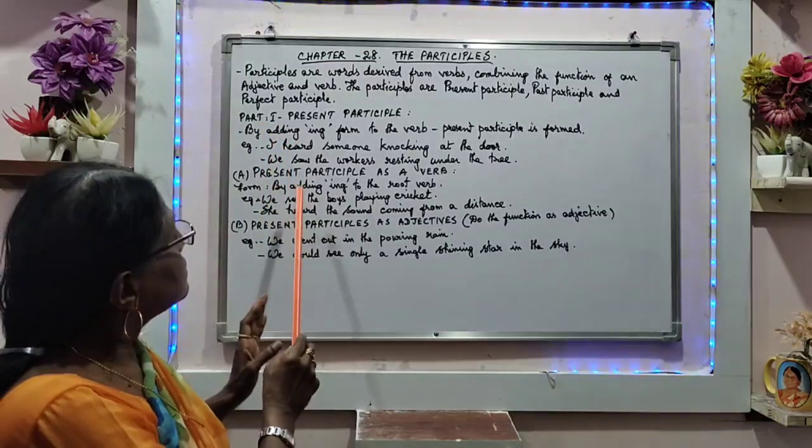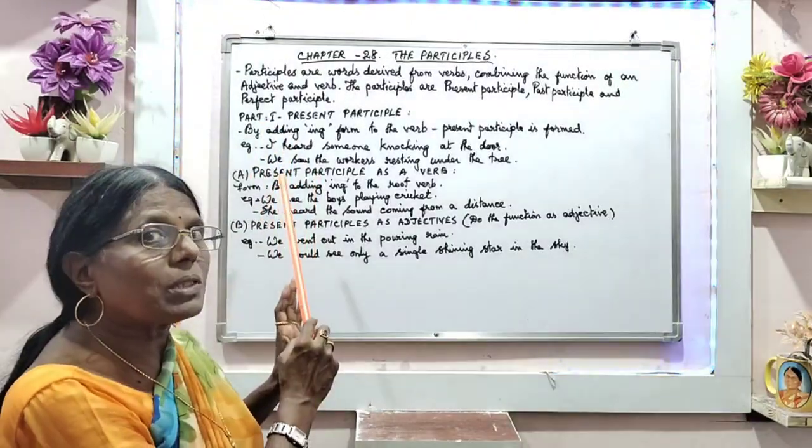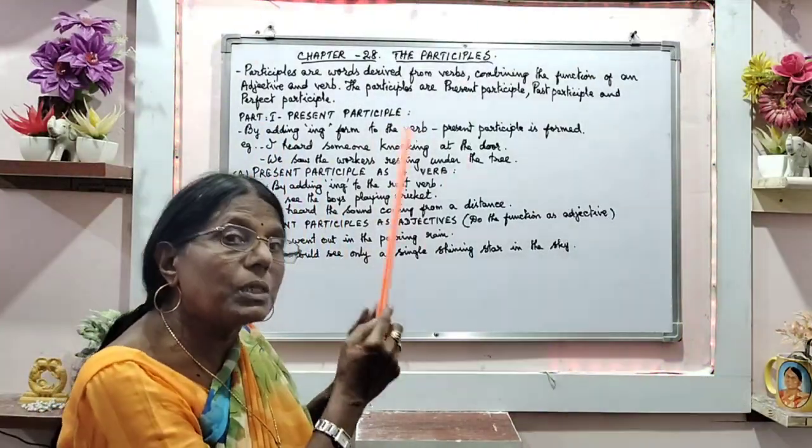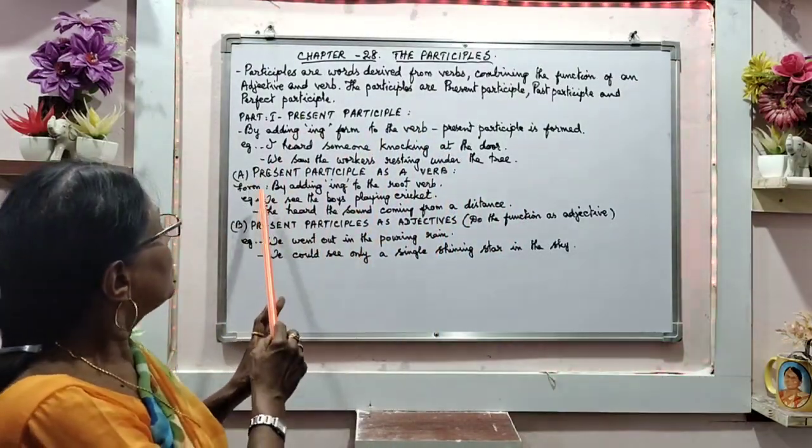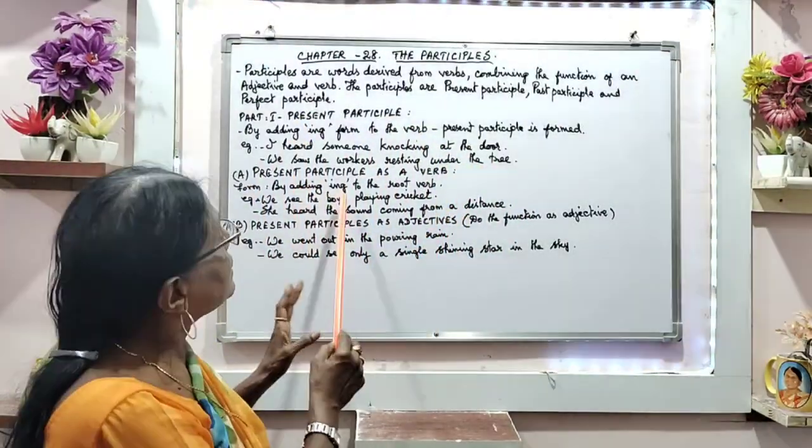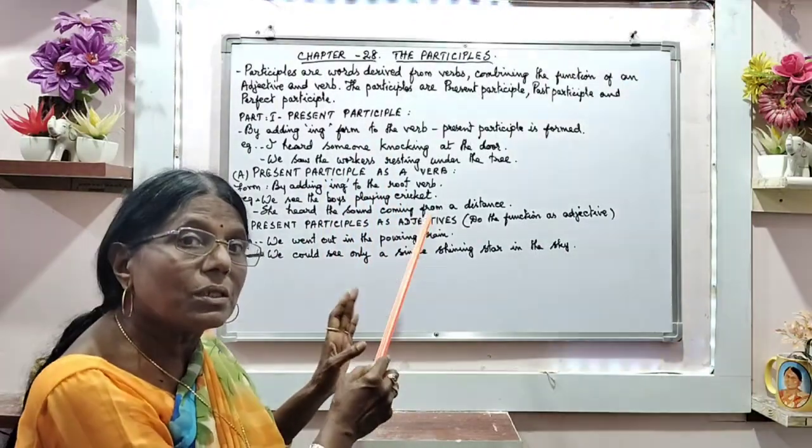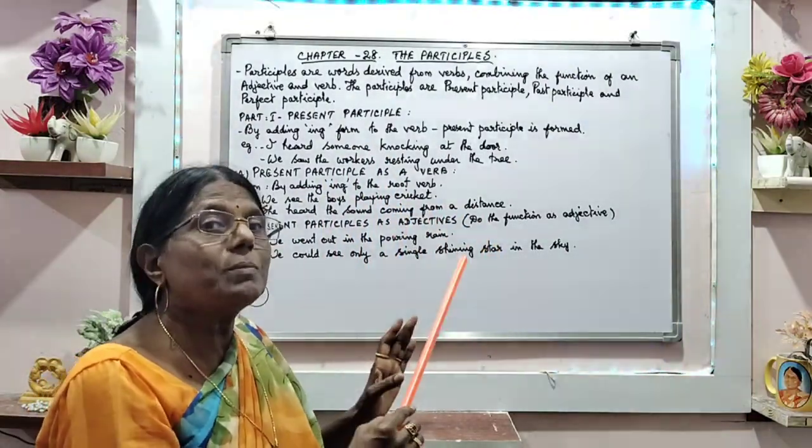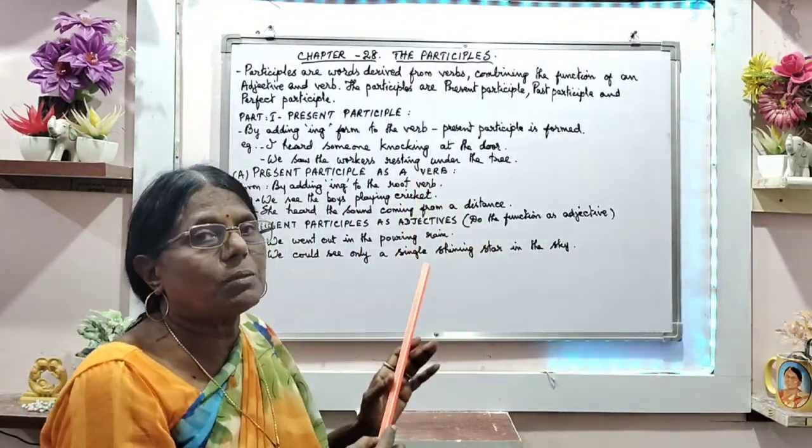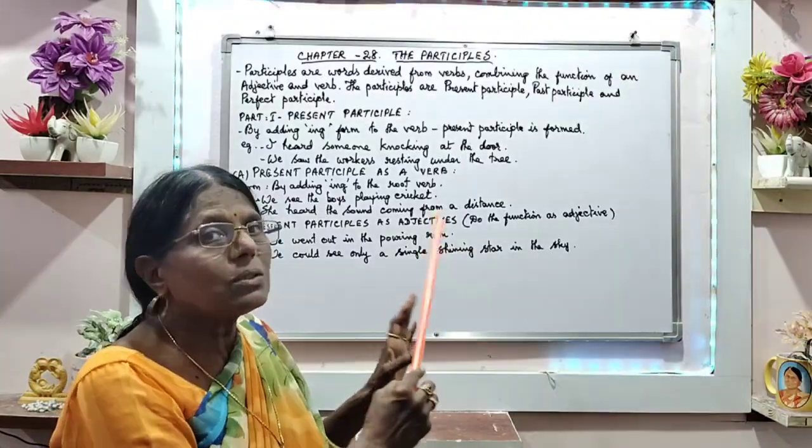Under this, how the present participle as a verb is used, I am giving you here. How is it formed? By adding ing to the root verb. The root verb is the present tense form of the verb. That is called the root verb.